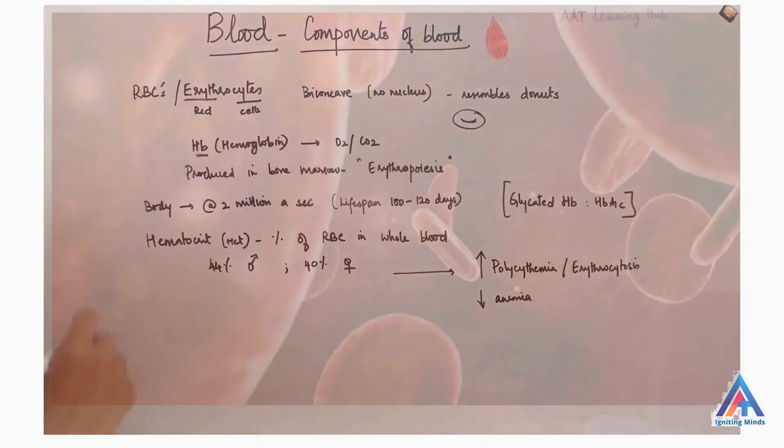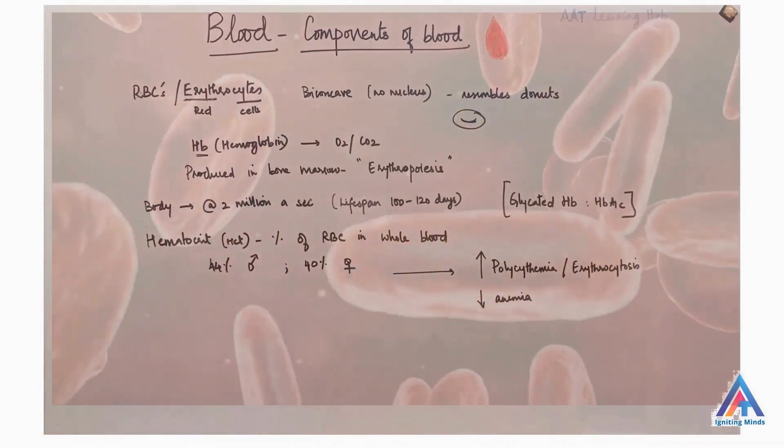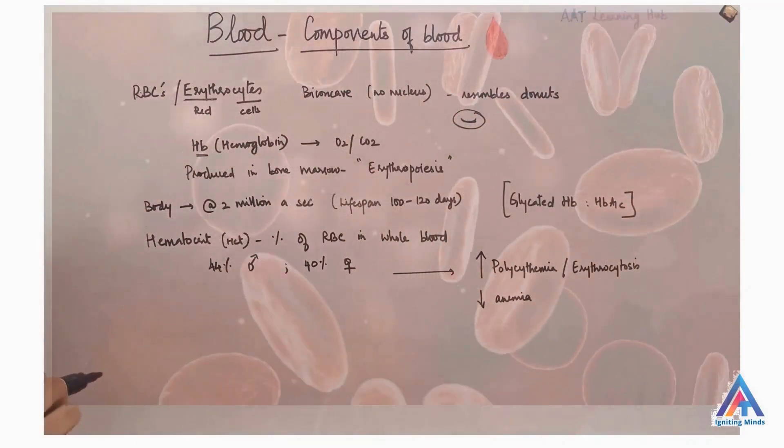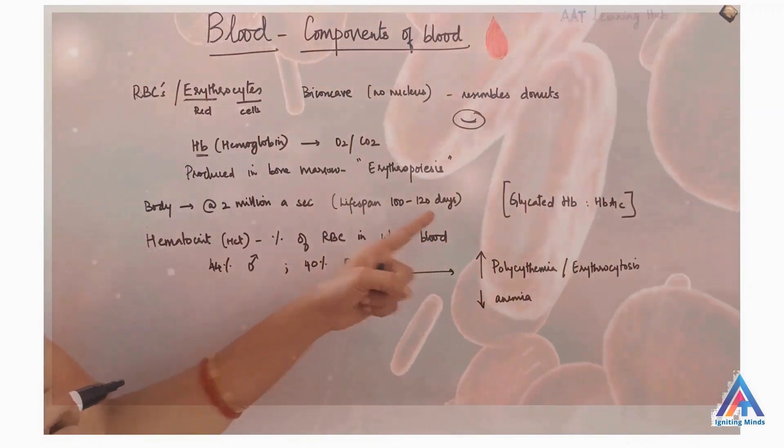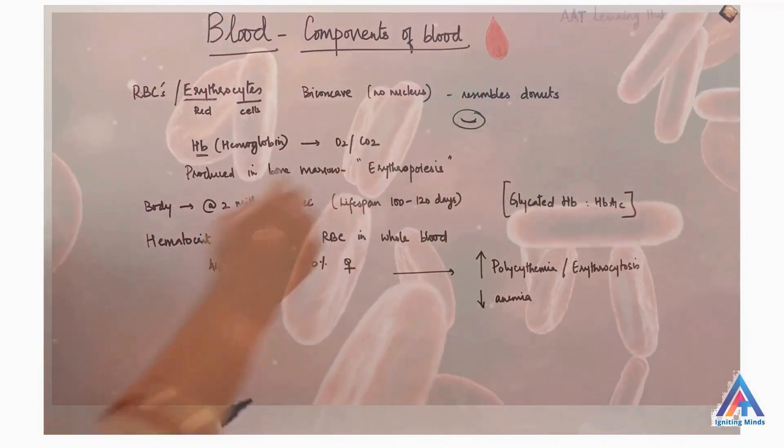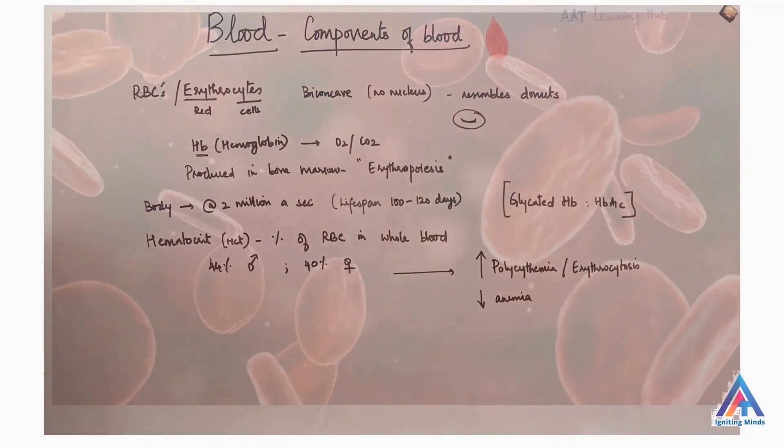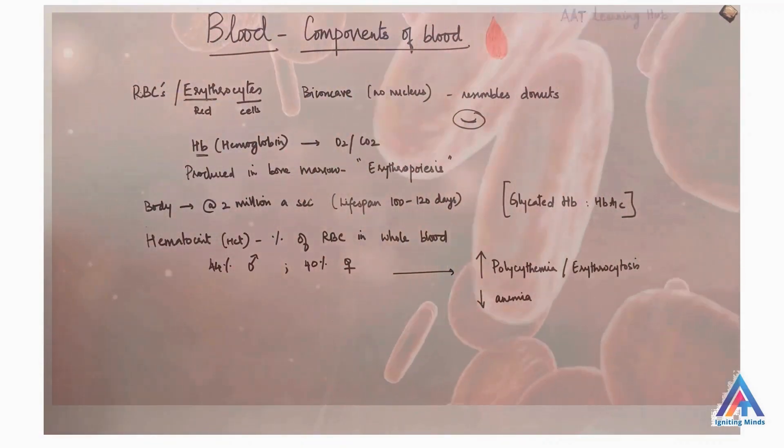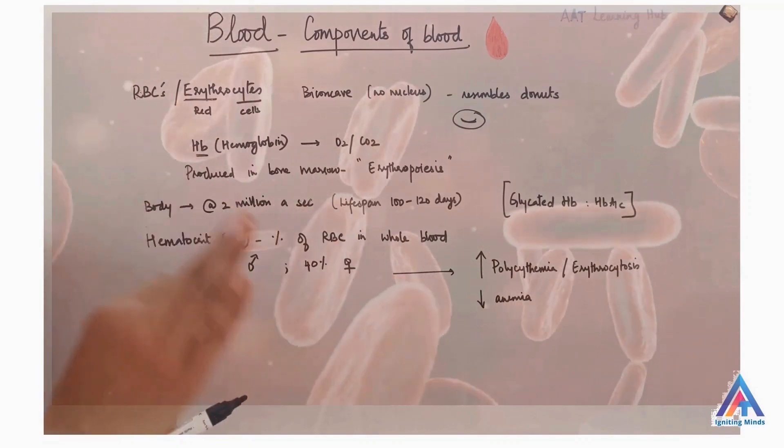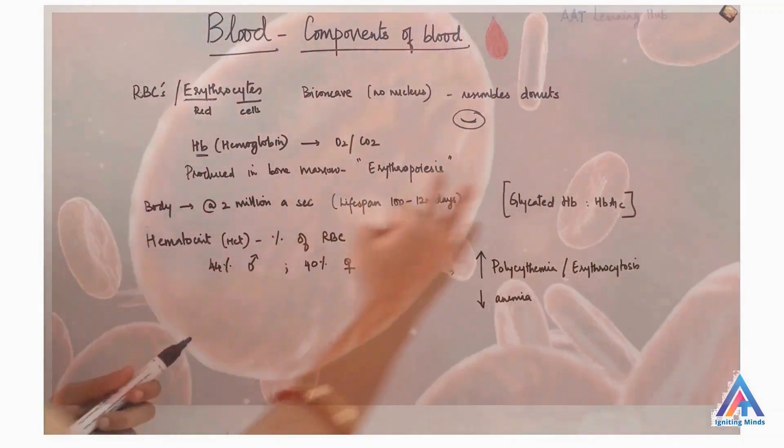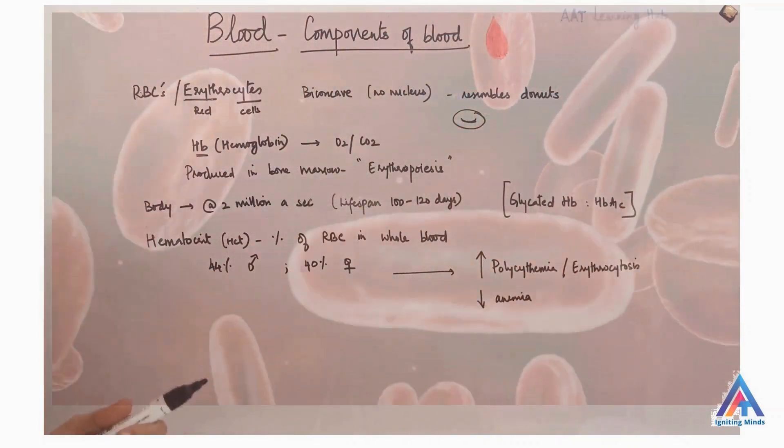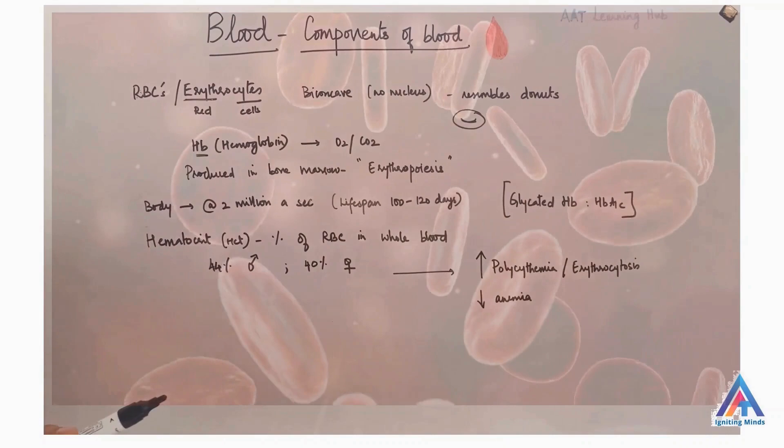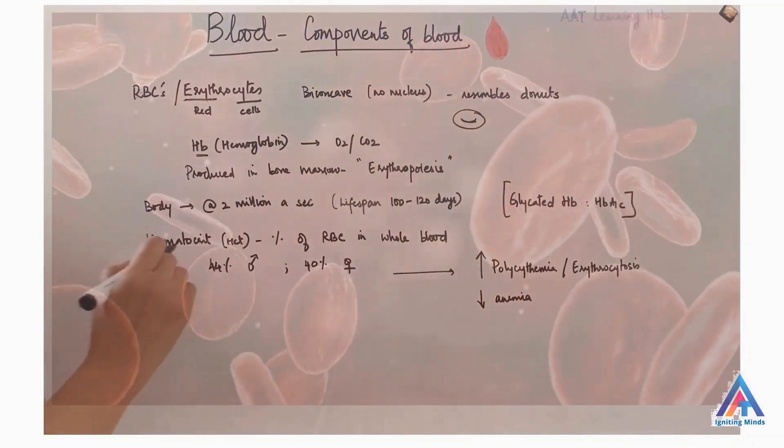RBCs are produced in bone marrow by a process called erythropoiesis. Our body creates RBCs at a rate of 2 million a second and they have a lifespan of about 120 days, after which new cells replace them. Because RBCs can survive between 100 to 120 days, they can determine your health for the past 3 months. This is the basis for glycated HB, which is HbA1c test performed to check blood glucose level in diabetics.